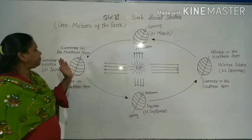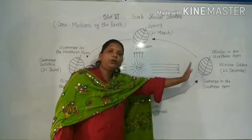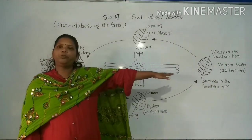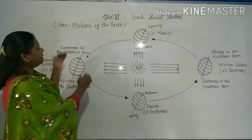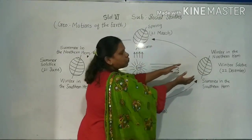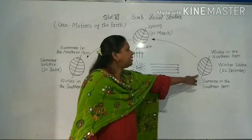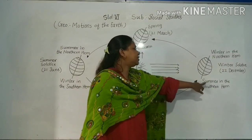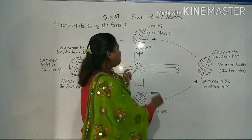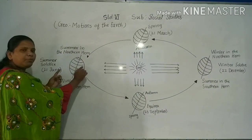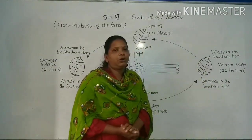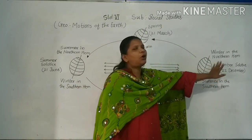Now on 22nd December, the Tropic of Capricorn receives the direct rays of the sun as the south pole is tilted towards it. The south pole receives maximum heat. So it is summer in the southern hemisphere and winter in the northern hemisphere. On 21st June we saw that the Tropic of Cancer gets maximum sun rays, and here on 22nd December it is the Tropic of Capricorn. This position on 22nd December is called the winter solstice.